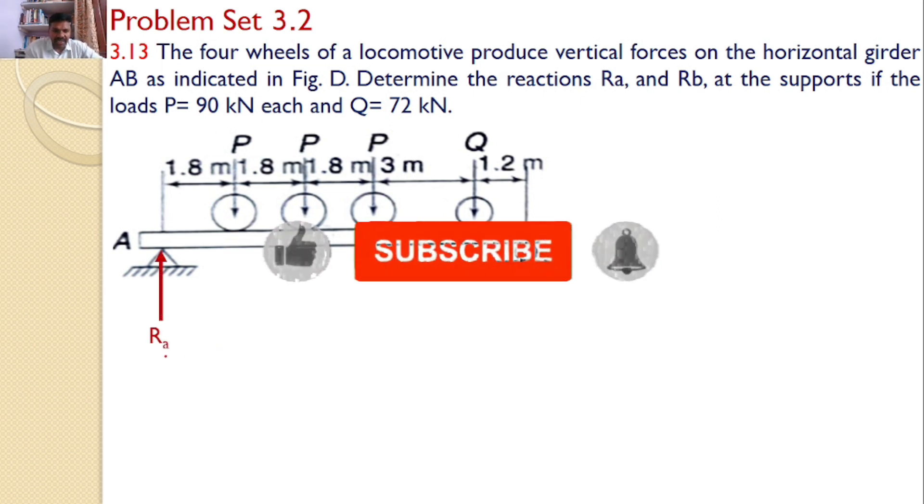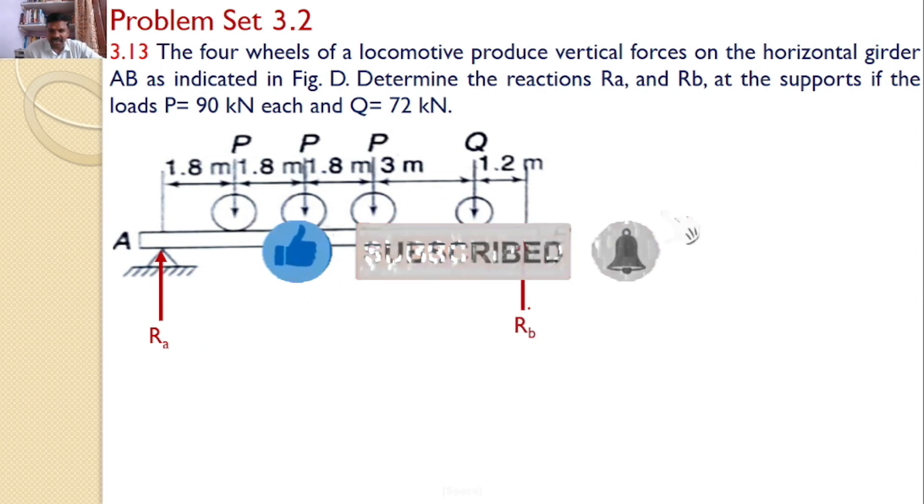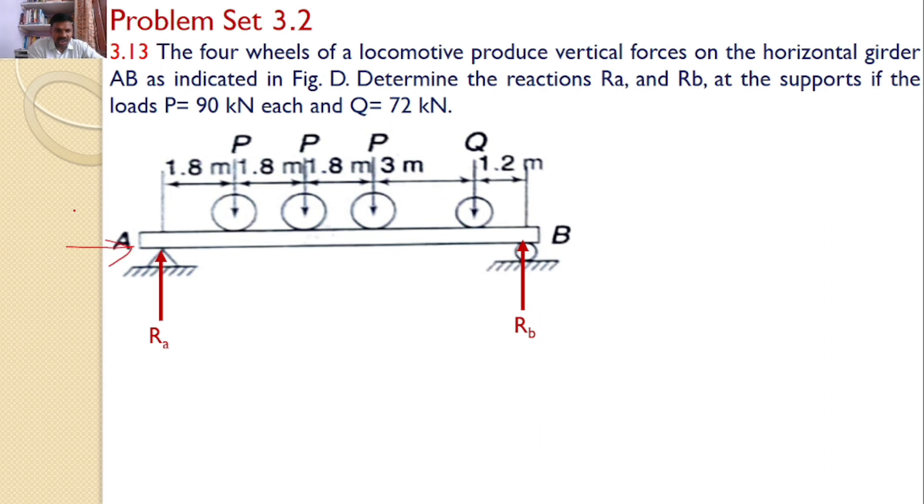Now, let Ra be the reaction at A and Rb is the reaction at B. In fact, at A, you can also find a horizontal reaction because it is a hinged support. Since there is no other horizontal force acting on the girder AB, I can consider RH equals 0. I am considering only the vertical force Ra, and there is only one force at B, that is reaction force Rb.